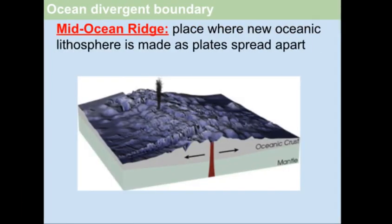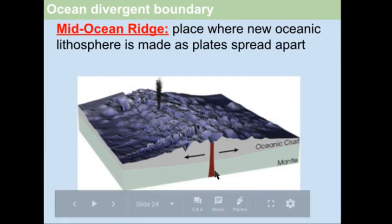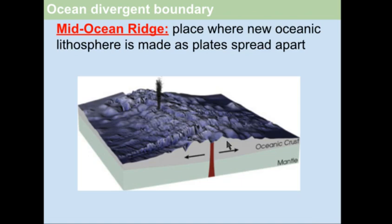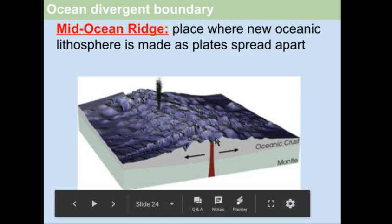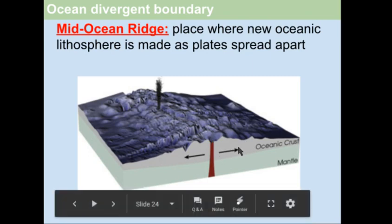Mid-ocean ridges are places where you're making new ocean crust. This is kind of what one looks like. It's a linear ridge, and this ridge is essentially a slow-oozing volcano, constantly making new plate. As new plate is being made, it pushes apart, it diverges, and more new plate is made. The newest plate follows the high point of this ridge.